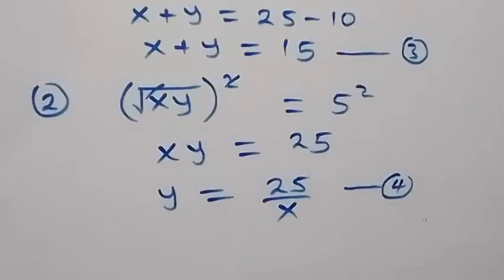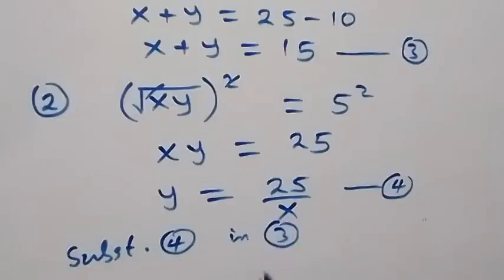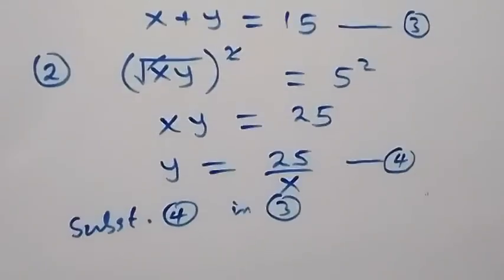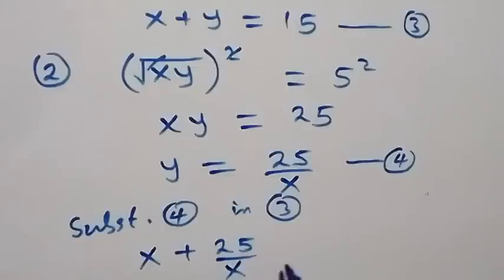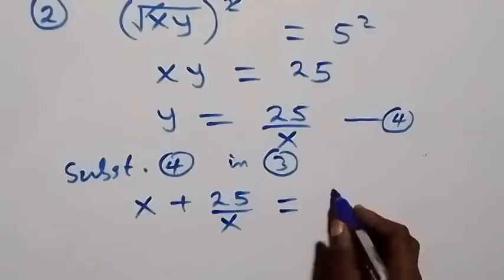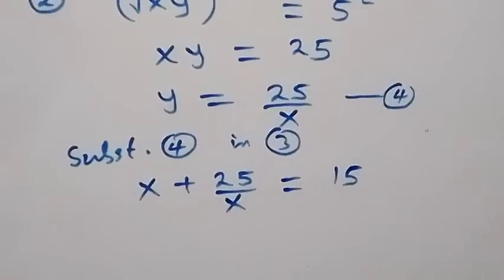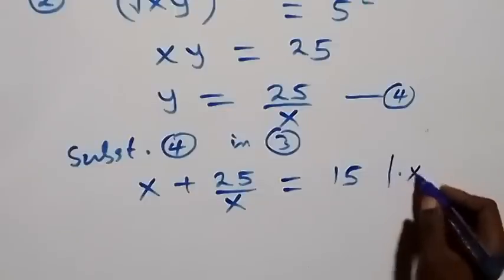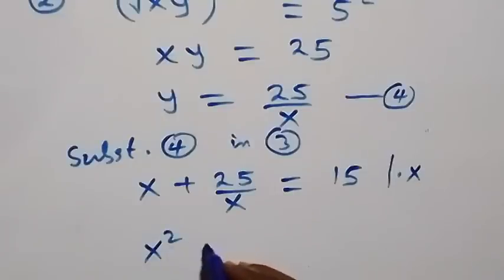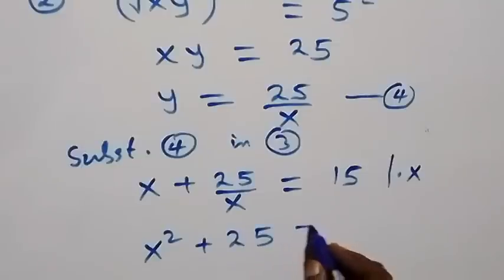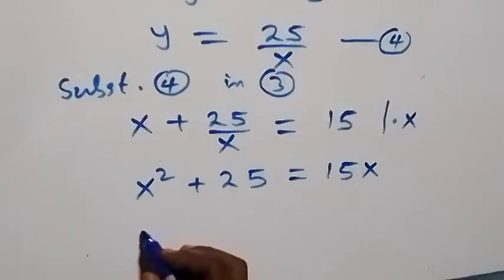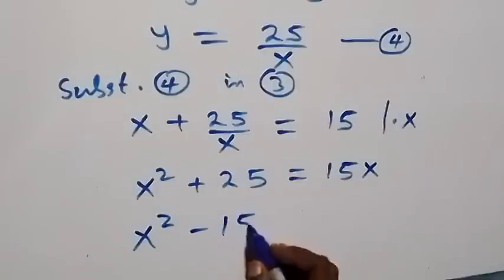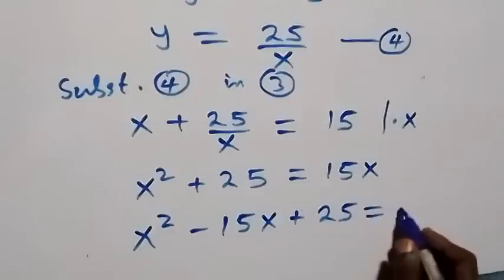We substitute equation 4 into equation 3. Equation 3 becomes x + (25/x) = 15. Multiplying through by x gives x² + 25 = 15x, and rearranging gives x² − 15x + 25 = 0.